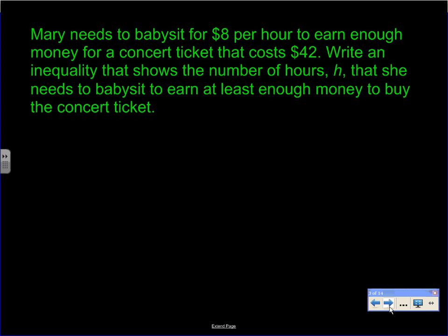We use one-variable inequalities for situations like this: Old Mary needs to babysit for eight dollars per hour to earn enough money for a concert ticket costing 42 dollars. Write an inequality using h for hours that shows how many hours she needs to babysit. Since she earns eight dollars per hour, we set that up as 8 times h.